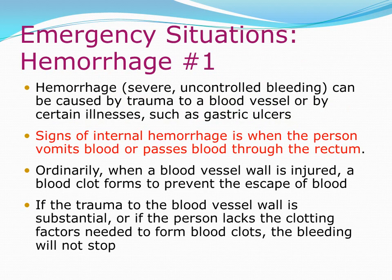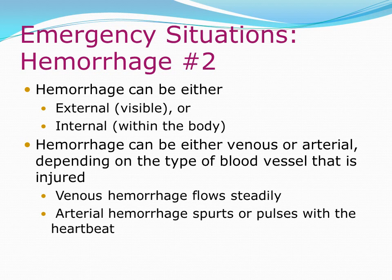Emergency situation — hemorrhage: Hemorrhage is severe and uncontrolled bleeding, caused by trauma to a blood vessel or by certain illnesses such as gastric ulcers. Signs of internal hemorrhage include vomiting blood or passing blood through the rectum. Hemorrhage can be external (visible) or internal. It can be venous (flows steadily) or arterial (spurts out and pulses with the heartbeat). If a blood vessel lacks clotting factors, bleeding will not stop on its own.